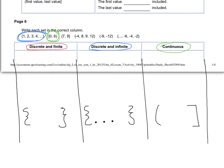The third one has fancy brackets and no dots, so it's discrete and finite — the only two numbers in this set are seven and nine. The fourth one also has fancy brackets and no dot dot dot, so it's also discrete and finite. The fifth one has parentheses, so that makes it continuous, and the sixth one has fancy brackets and the dot dot dot, so that makes it discrete and infinite.